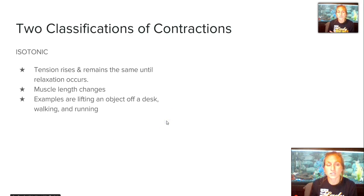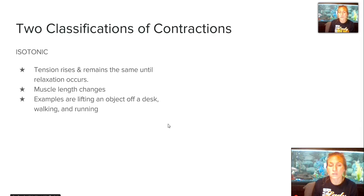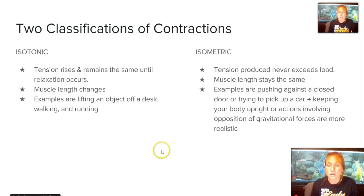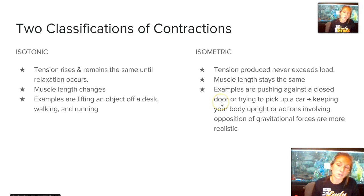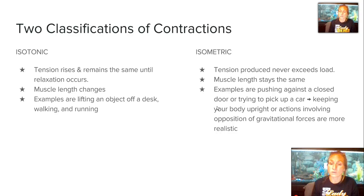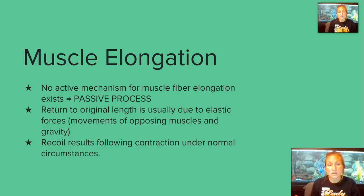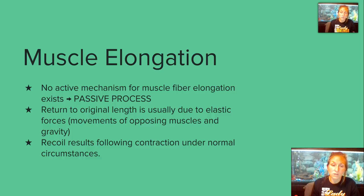There are two classifications of muscle contractions. Isotonic: tension rises and remains the same until relaxation occurs, and the muscle length changes — examples include lifting an object off a desk, walking, or running. Isometric: the tension produced never exceeds the load, so the muscle length stays the same — examples include pushing against a closed door, trying to pick up a car, or keeping your body upright against gravitational forces. There is no active mechanism for muscle fiber elongation; it is a passive process. The muscle naturally returns to its original length due to elastic forces or opposing muscles and gravity.